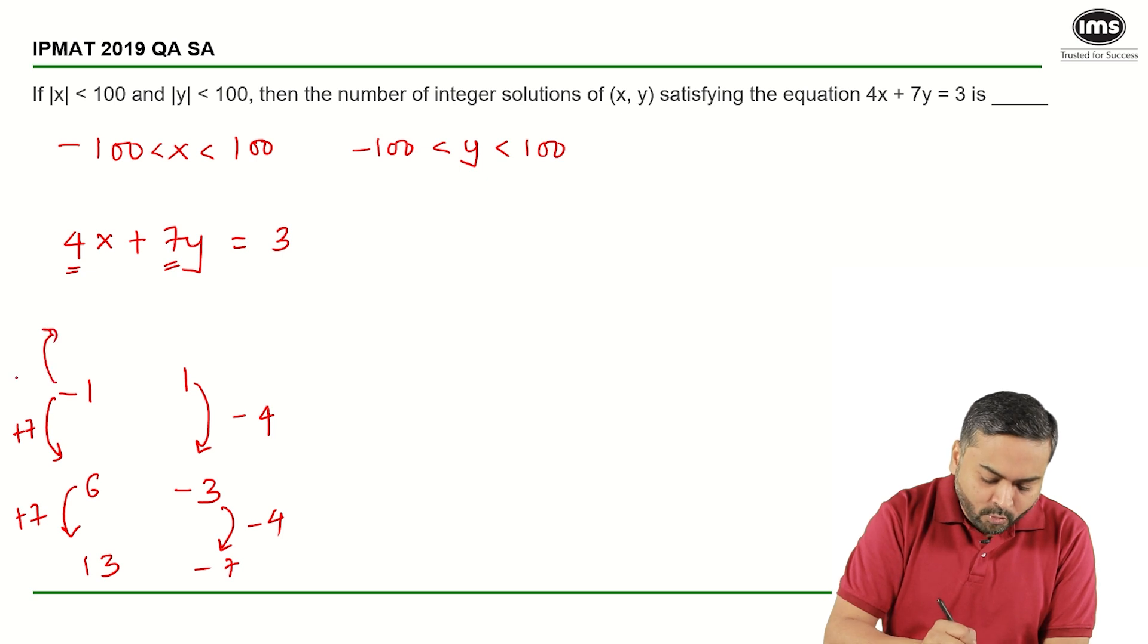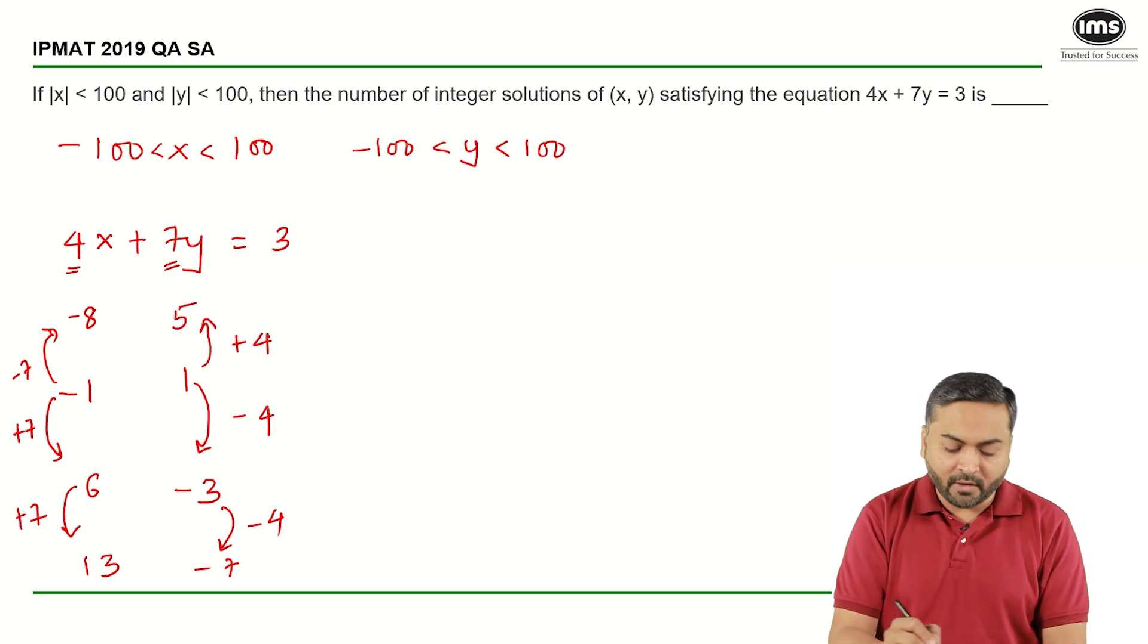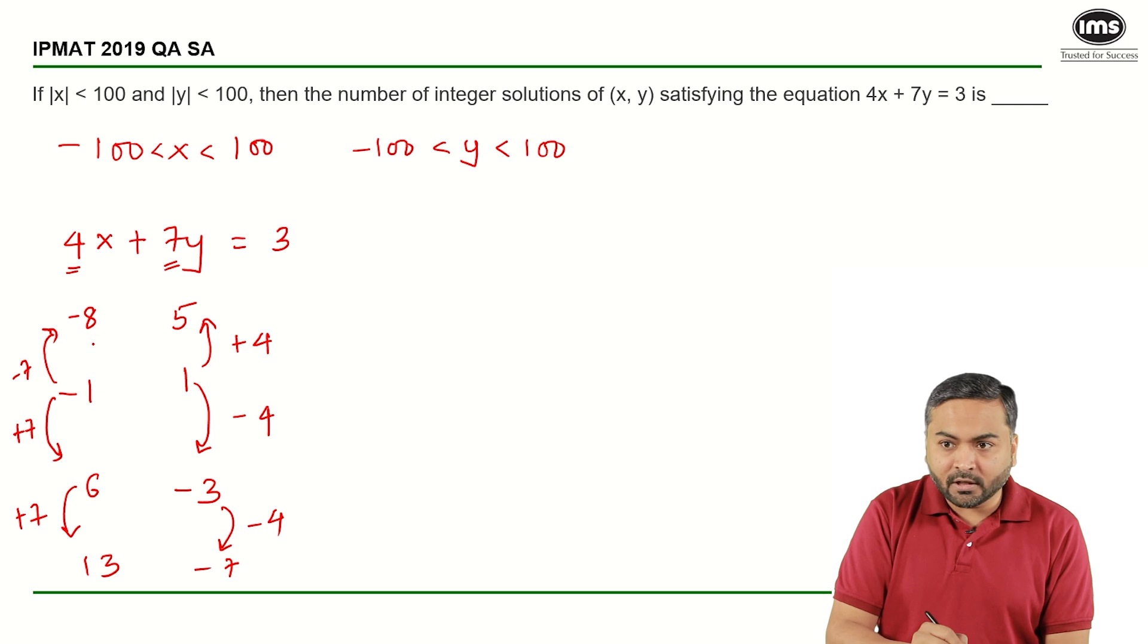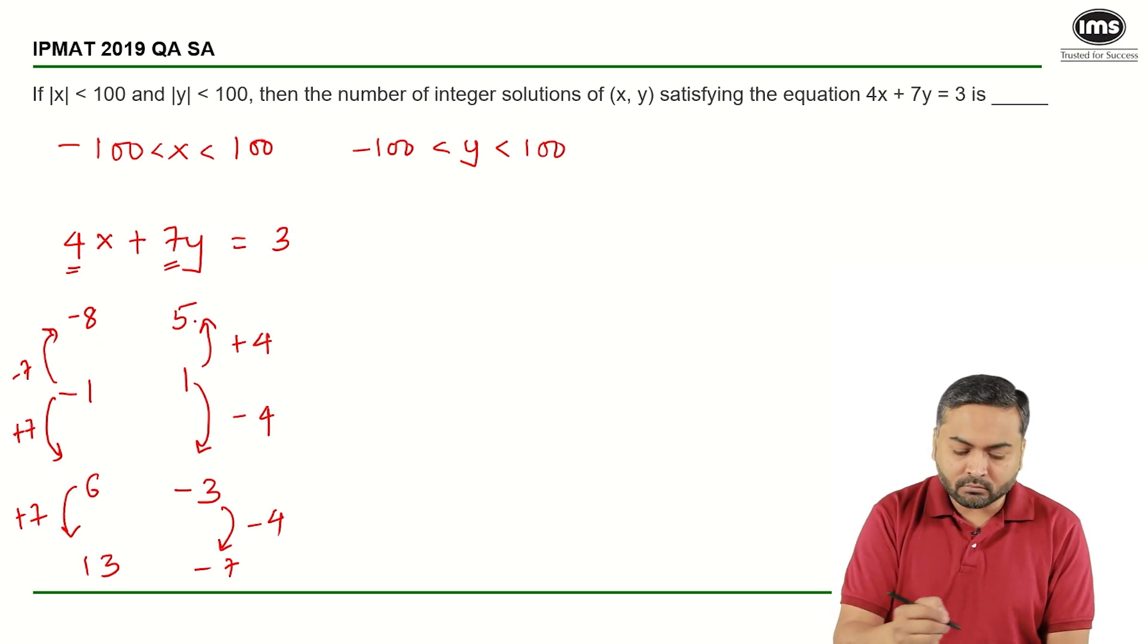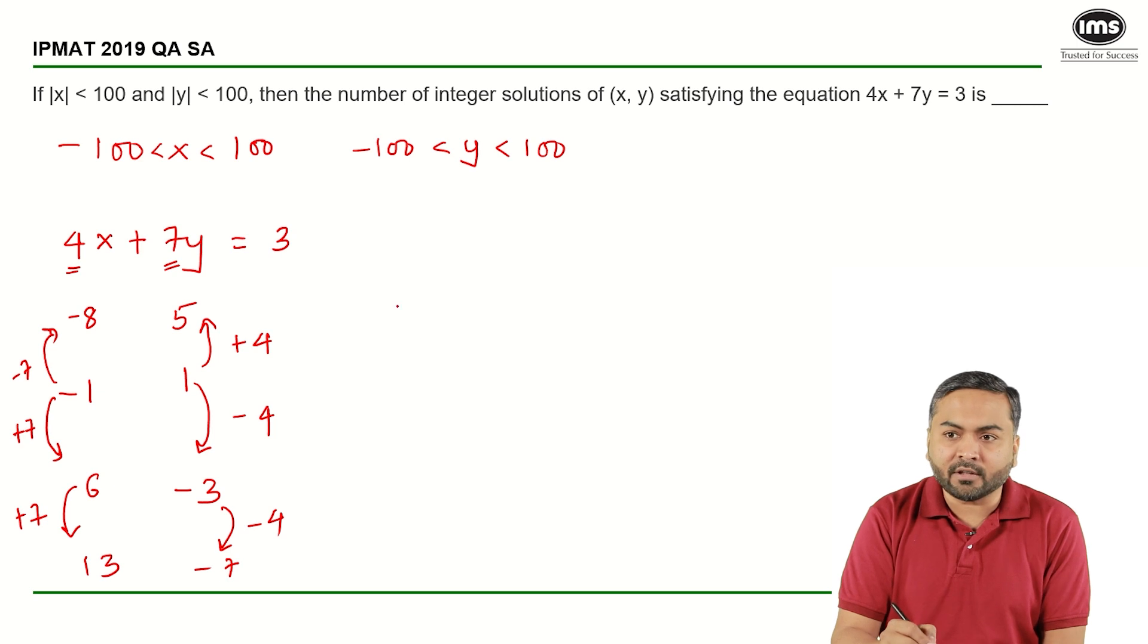Now, I can decrease this value by minus 7 and decrease this value by minus 7. I get that as minus 8. If I increase this by 4, it gives me 5. We can verify this. 4 into minus 8 is minus 32 and 7 into 5 is 35. So, the addition is minus 32 plus 35, that is 3.